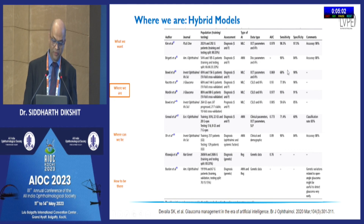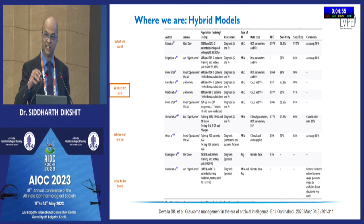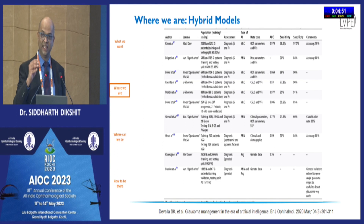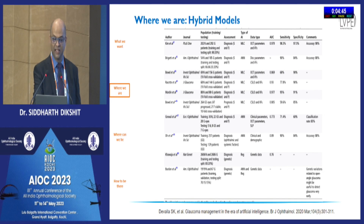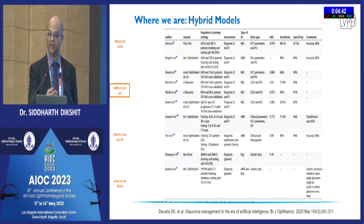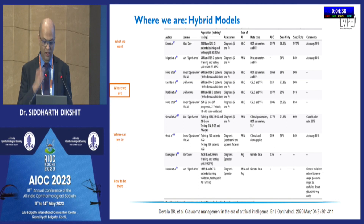Why is there such a huge variation between all of these? Because the software that each study uses is very different and indigenously developed. So if we say AI is good, we cannot infer that from multiple trials. We would have to say the AI model developed by Kim et al. seems very promising. Each model needs to be evaluated individually.